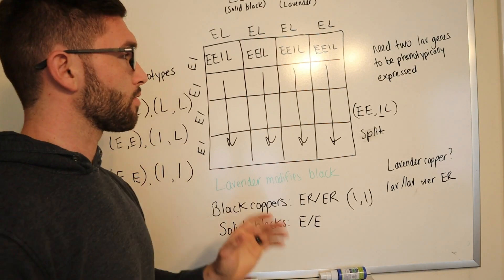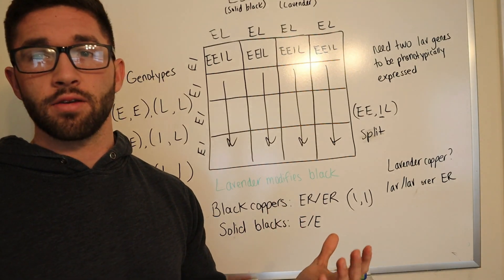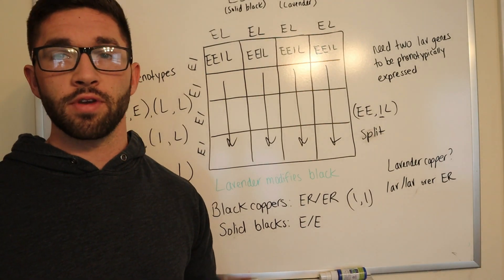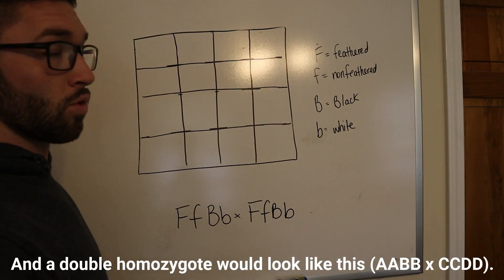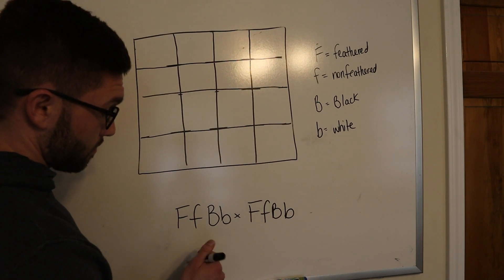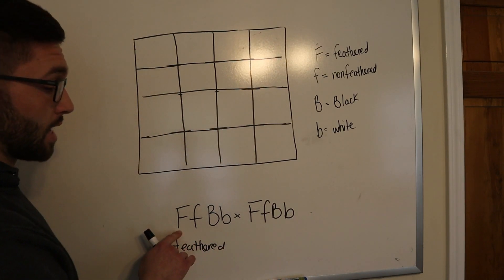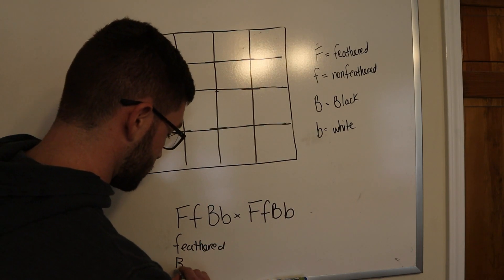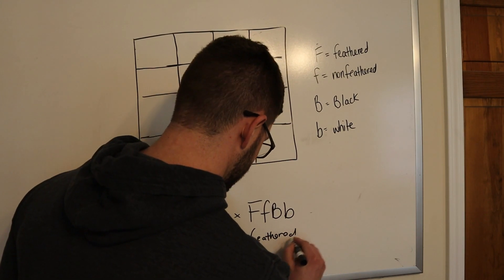And so I'm going to use another example. And we won't do lavender and black, we'll do traits that are easier to see like orange eyes or feathered feet. So for this one, we're going to do a double heterozygous cross. And then black or white shanks. Shanks are just feet. So for this one, this one has feathered feet because feathered is dominant over non-feathered. And it has black shanks. And so does this one, the same thing. Feathered black.